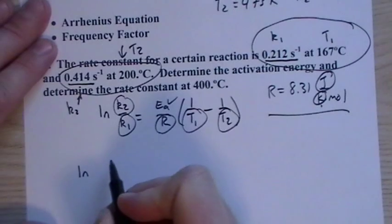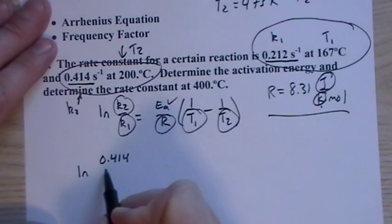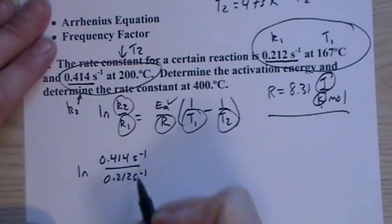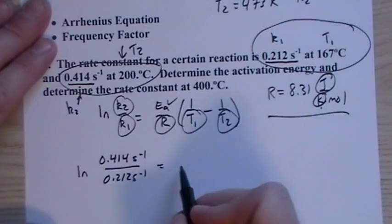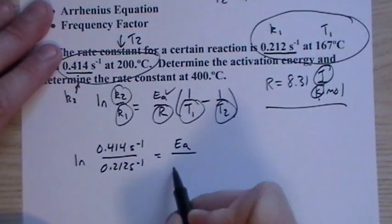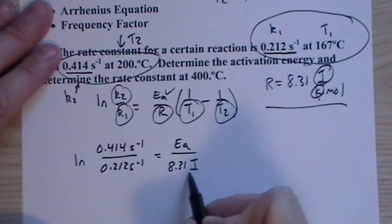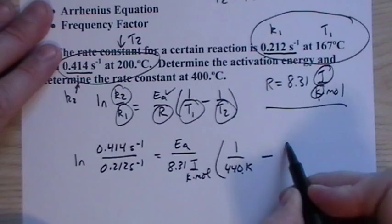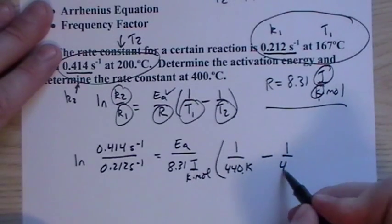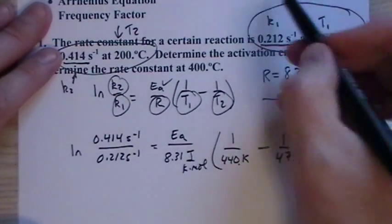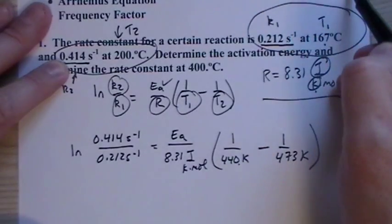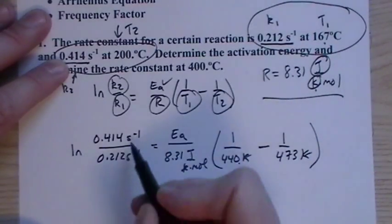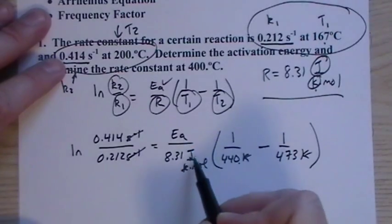So we have natural log of k2, k2 is 0.414, and it's inverted seconds, and those are going to cancel because it's a logarithm, so they have to. That argument has to have no units of measure. Ea, we don't know, that's what we're solving for. This is 8.31 joules per k mole, times 1 over T1 is 440. I'm going to double-check all of the values, make sure I have T1 and T2 correctly labeled.